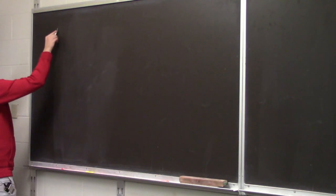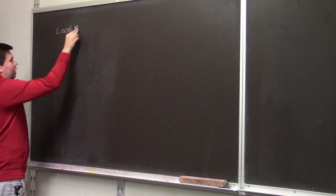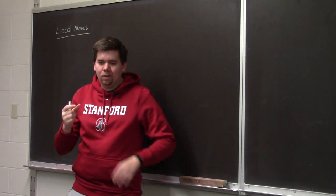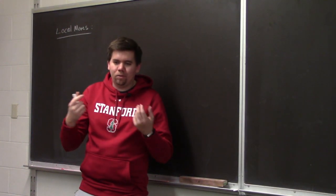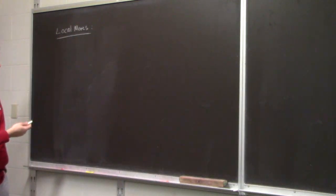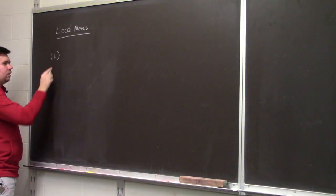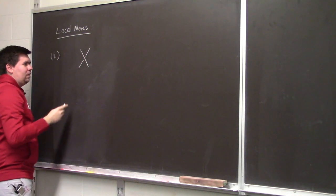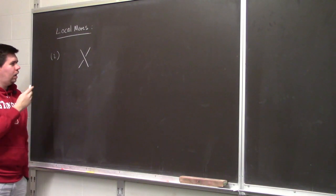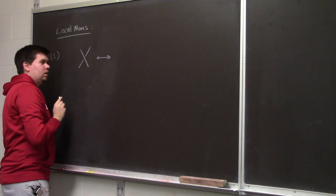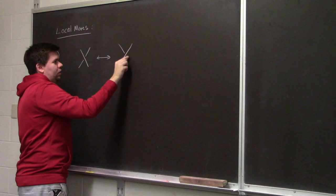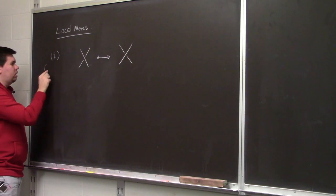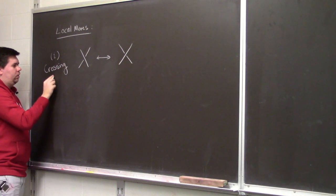Today we want to talk about local moves. What I mean by a local move is we're going to talk about how modifying a knot or a link locally in one small way impacts the knot or the link. The simplest example: when you see a crossing on your knot or link, a local move we can do is switch it with the opposite crossing — if it's an undercrossing it becomes an overcrossing, and vice versa. This local move is called a crossing change.